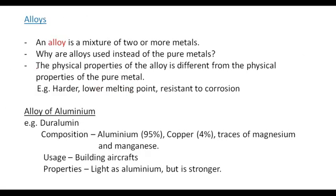An alloy is a mixture of two or more metals. Why are alloys used instead of pure metals? The physical properties of the alloy are different from the physical properties of the pure metal. The alloy may be harder, it may have a lower melting point, or it may be resistant to corrosion.